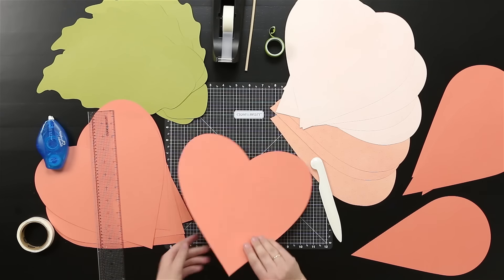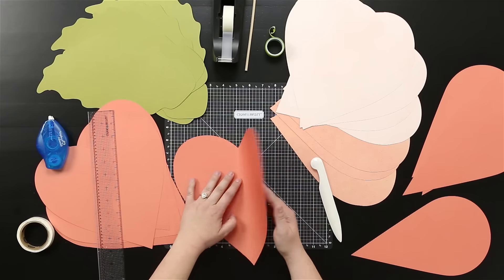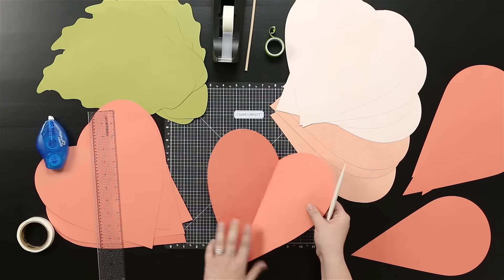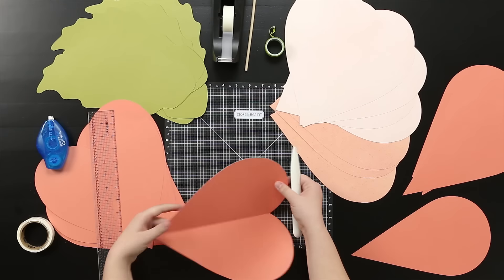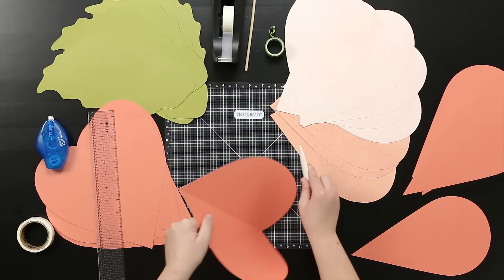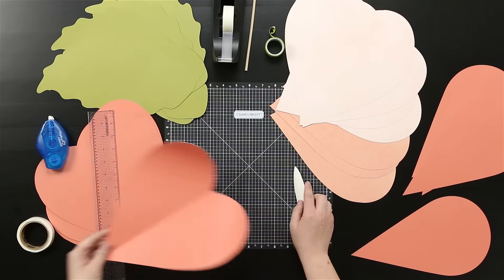I'll fold the heart over so that I've got that score line right there. It makes it so much easier. Now I'm going to take the bone folder and just kind of gently put some pressure, slide it across to help that roll over and curl.